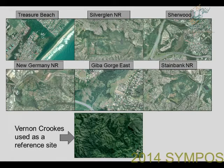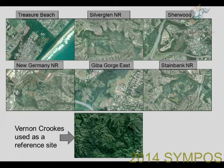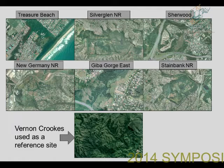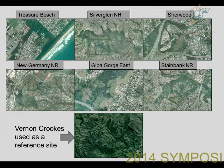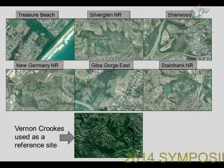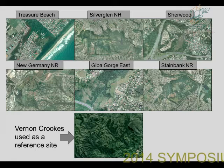What has this left us with? Basically, we've got these remnant patches of open space, especially in the coastal area, that sit within quite a dense urban matrix. Within them, you've got a mosaic of grassland, woodland, and forest types typical of the Indian Ocean coastal belt.